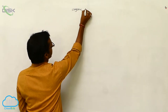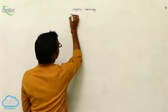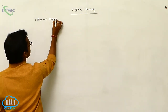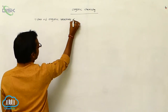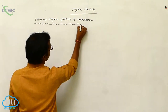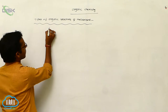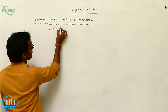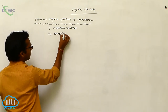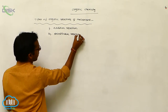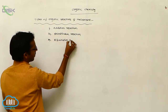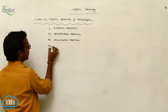In organic chemistry, the organic reactions are classified into four types: one is addition reaction, second one is substitution reaction, third one is elimination reaction, and fourth one is rearrangement reaction.